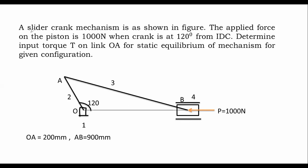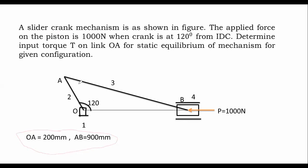Now we are dealing with the slider crank mechanism problem. Let's read out the problem. Here we have the slider crank mechanism as shown in the figure. Sometimes in the exam the figure may be given or may not be given. If the figure is given, dimensions will be available on the figure. If the figure is not given, dimensions will be given like crank dimension OA and connecting rod dimension, that is link three, dimension AB.